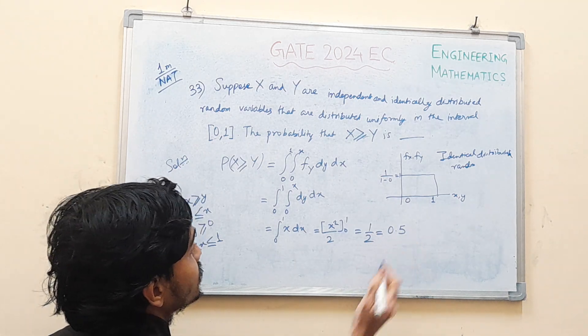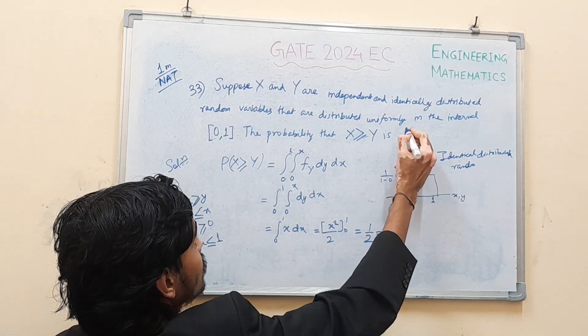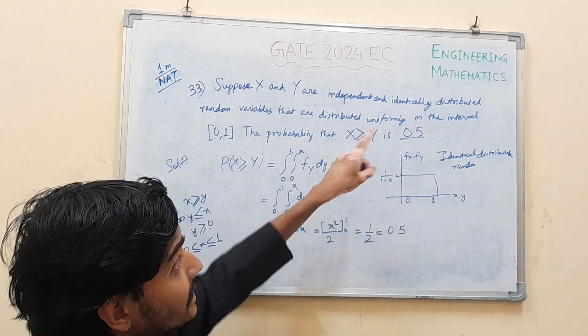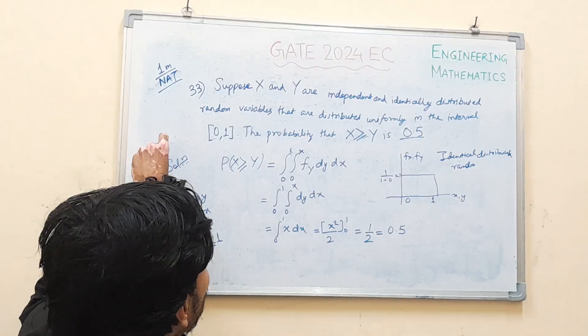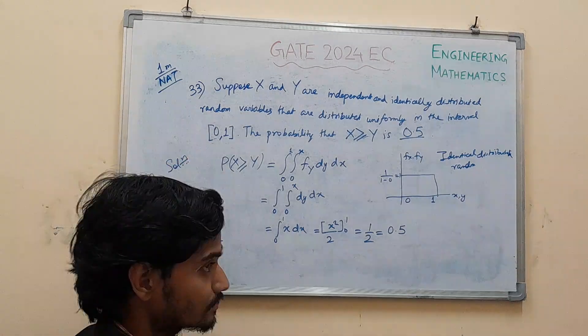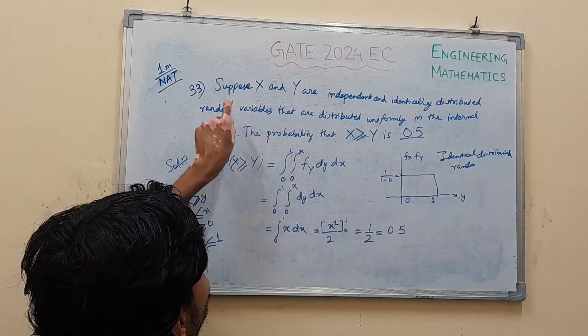So the probability that X greater than equal to Y is 0.5. If X and Y are independent, identically distributed random variables, distributed uniformly in the interval 0 to 1. This is the basic concept of probability density function and identically distributed random variables.